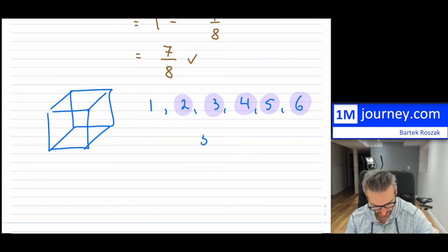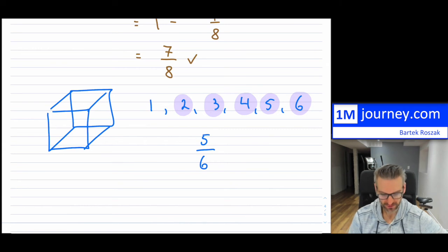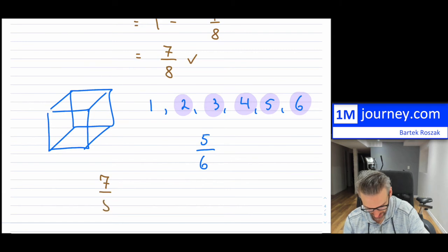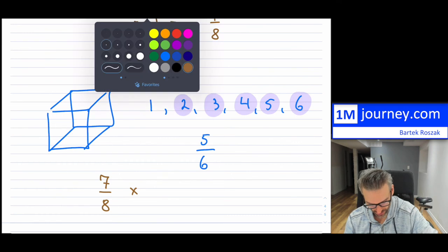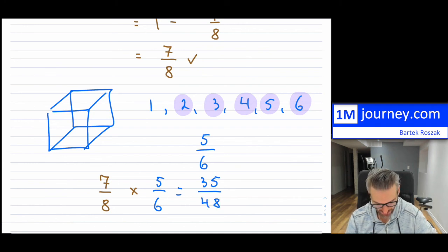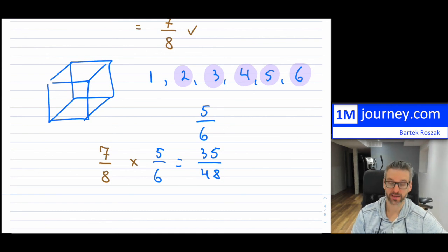Well, so this is five out of six. That's the chance because really just one is not going to work for us. So now we take the two probabilities. So the probability of first trying to get at least one tail, and then we're gonna be multiplying it by the probability with the die. And then this is gonna be 35 all over 48. So seven times five and then eight times six.